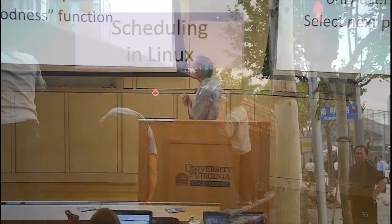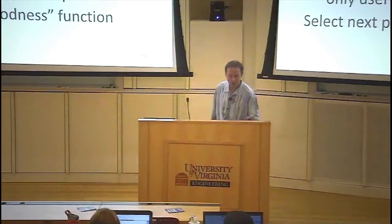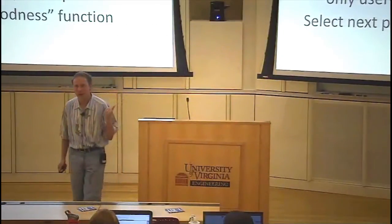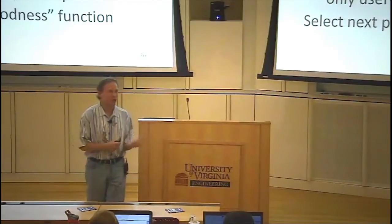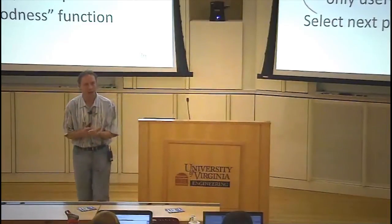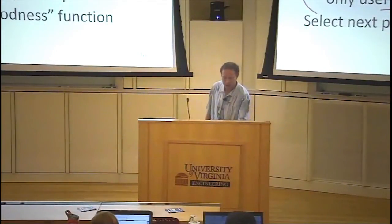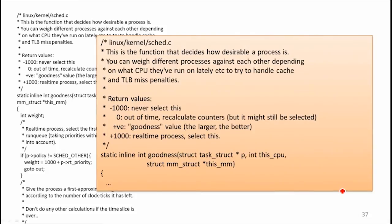Let me talk briefly about what the Linux scheduler was doing before 2002. It had three types of processes: normal user processes, non-preemptible, and real-time. Real-time processes are things like video players with real-time constraints. Parts of the kernel run non-preemptibly — it's not a fully preemptive OS in that sense, only kernel-level processes can do that, while user-level processes can be preempted. The scheduler would use a goodness function, using priority values and other factors, to pick the best process to run.